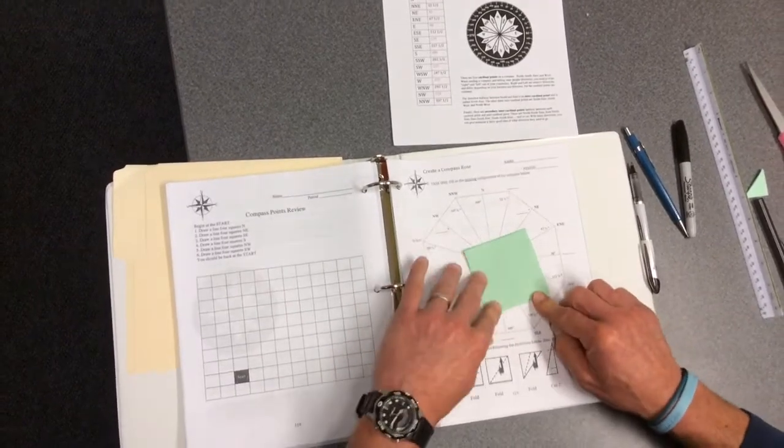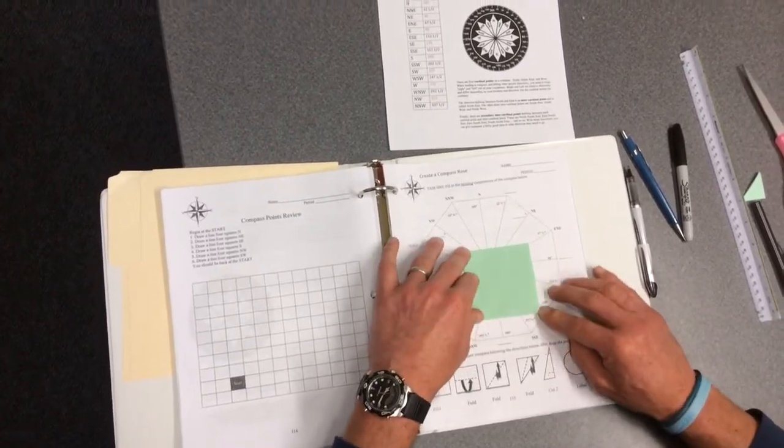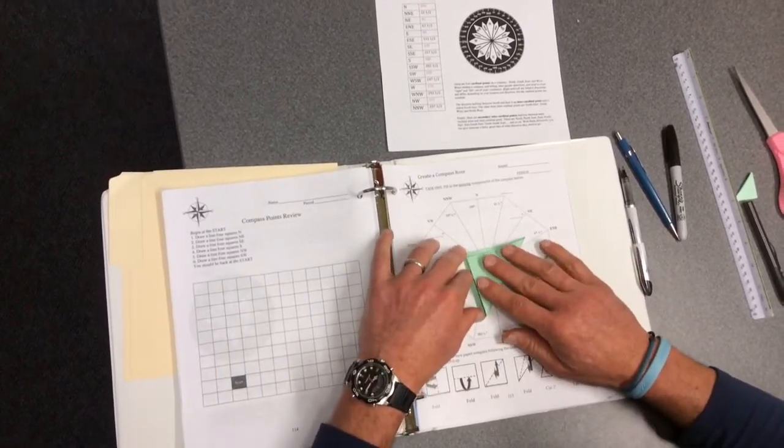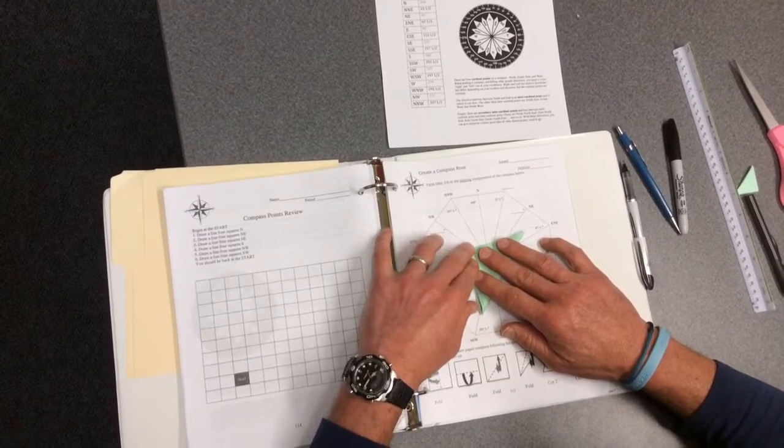Now take the bottom right hand corner and bring it up towards the top left hand corner and make another crease.